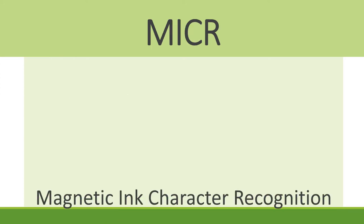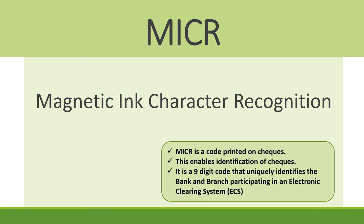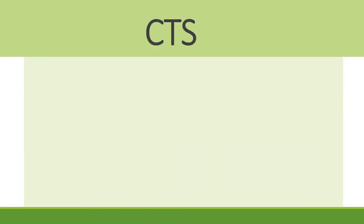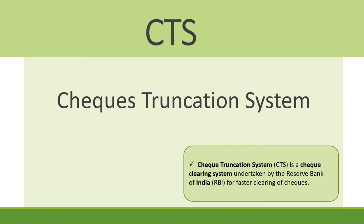The next term is MICR. The full form of MICR is Magnetic Ink Character Recognition. MICR is a code that is printed on checks and enables their identification. It is a nine-digit code that uniquely identifies both the bank and the bank branch participating in the Electronic Clearing System, that is ECS. The full form of CTS is Cheque Truncation System. It is a cheque clearing system started by the RBI for faster clearing of cheques.